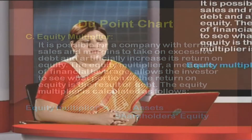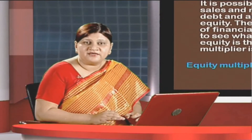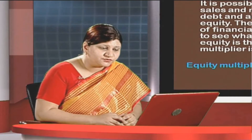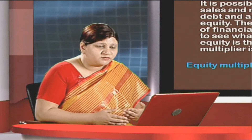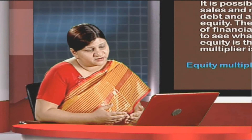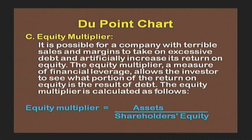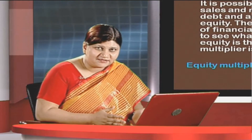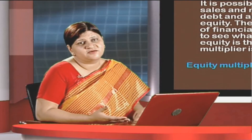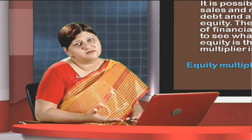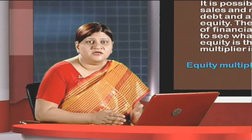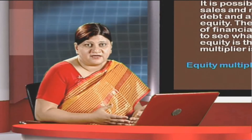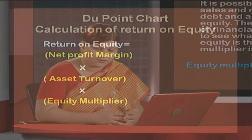The equity multiplier is an indicator of how much debt is being used to generate revenues. It allows investors to see the proportion of return on equity which is the result of debt — that means, if return on equity is shown as higher, we can analyze how much of it is because of debt. Financial leverage is used, and the same formula to compute financial leverage — either on an income basis or balance sheet basis — would be used to ascertain the equity multiplier and find out return on equity.